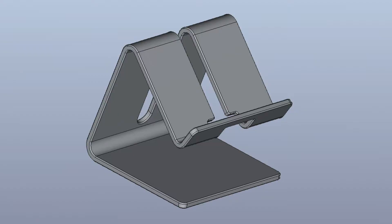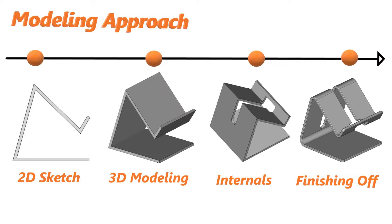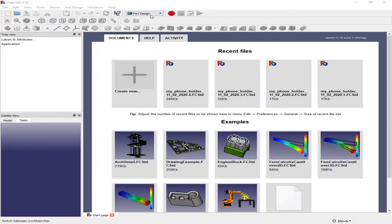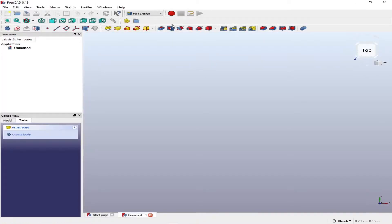Hello viewers, welcome back to the channel. Today we are going to model a cell phone holder, which could be made of metal, plastics, or even 3D printed. We start with a 2D sketch, then pad or extrude to a 3D model, add internals such as pockets or slots, and finish off with rounding of edges. We are going to use a lot of constraints in the sketch, so I have a video created earlier — I'll put the link so you can watch that and come back to this.